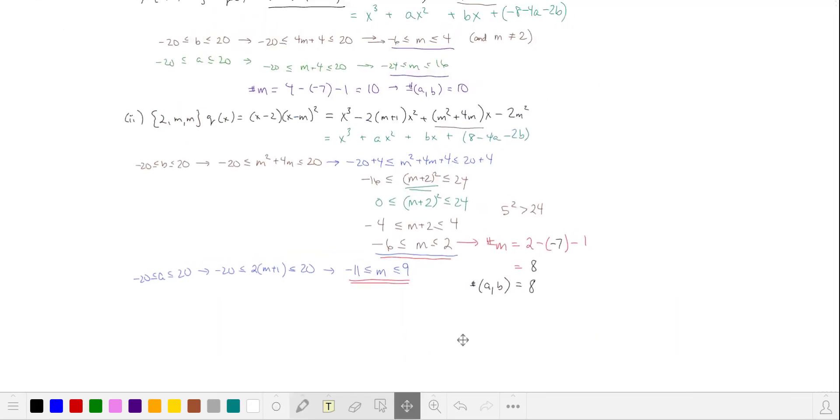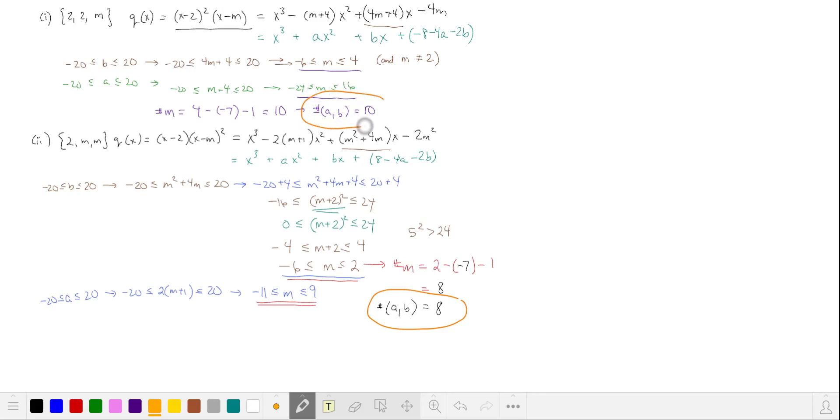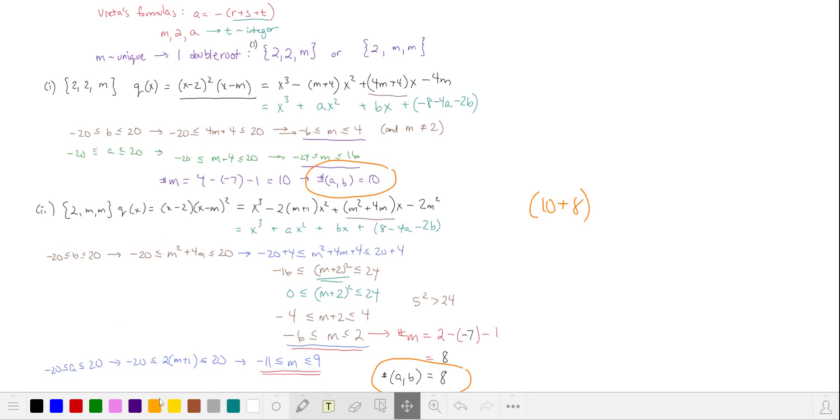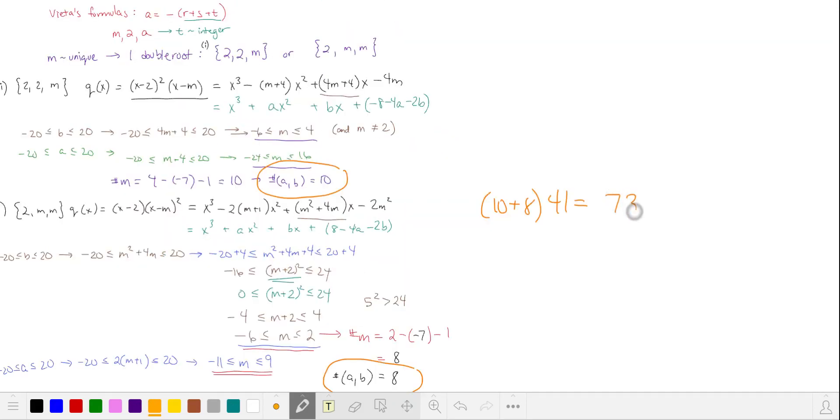Altogether, for these two cases, we have 8 valid values and 10 more valid values for a and b. And independent of that, we also had 41 possible values of c. And our answer is 738.